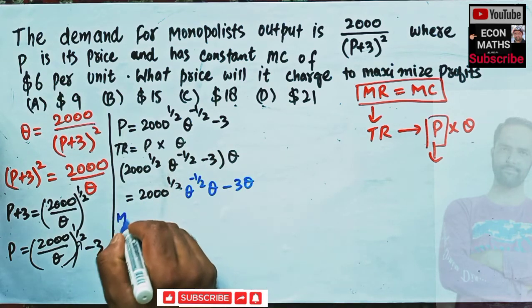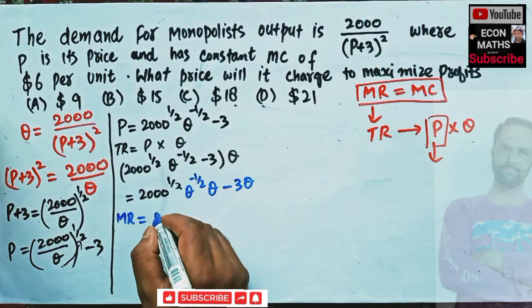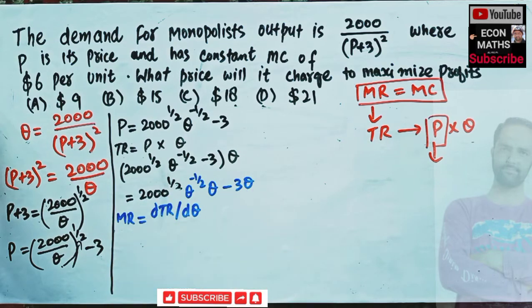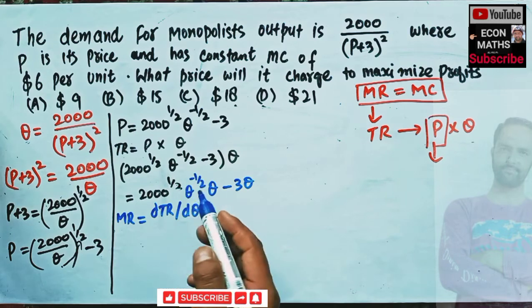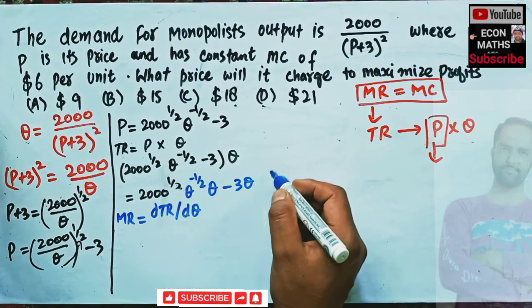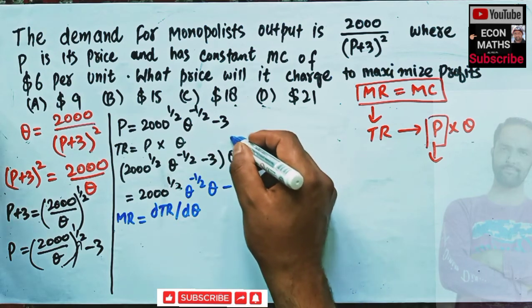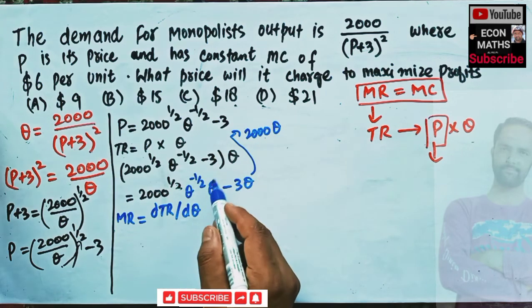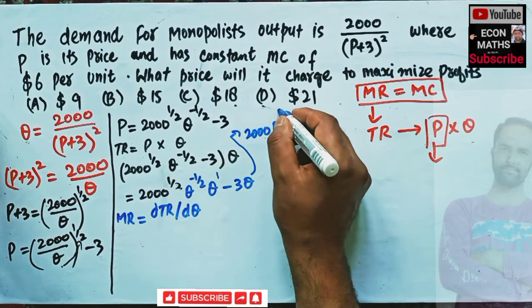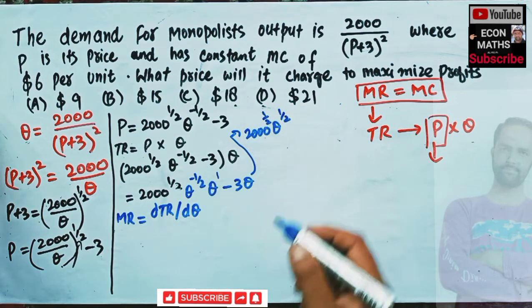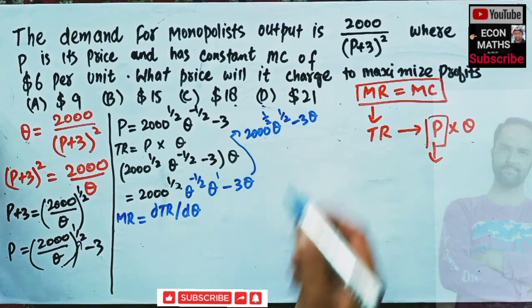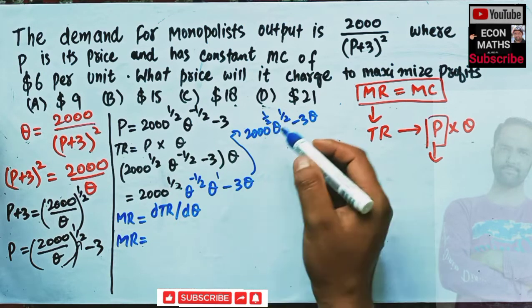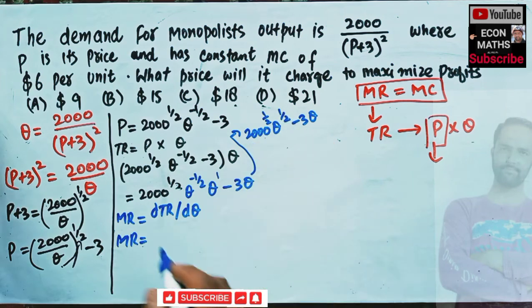Marginal revenue is simply the derivative of the total revenue function with respect to output. So taking the derivative of TR = 2000^(1/2) · Q^(1/2) − 3Q with respect to Q, we apply the power function rule: the exponent becomes a coefficient and is reduced by one.